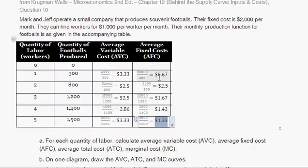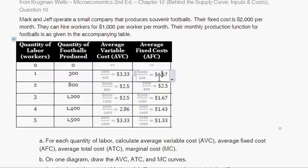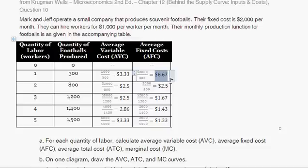While average variable cost typically has a U-shape, average fixed cost has a constantly declining shape. Think about a car factory: if you build a billion-dollar car factory and produce just one car, the average fixed cost is $1,000,000,000. If the factory produces two cars, the average fixed cost drops to $500,000,000. And if it produces a million cars, you can see how average fixed cost is just constantly decreasing.